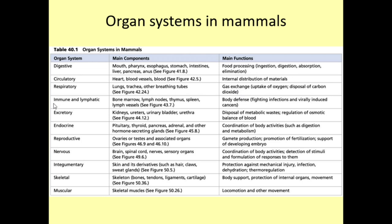The immune system incorporates the lymphatic system. It's quite a complex system including bone marrow for making blood cells, lymph nodes, the thymus, the spleen, and lymph vessels. These all work together for body defense — fighting bacterial and viral infections. Our immune system works hard to protect us from bacteria, viruses, virally induced cancers, and anything else that might try to infect us.